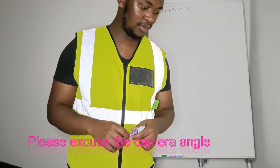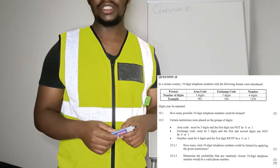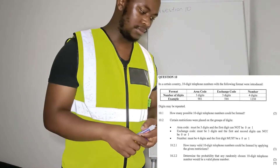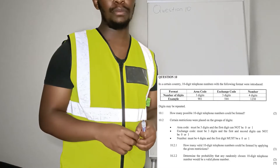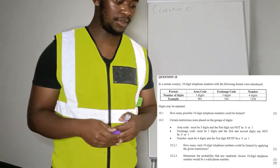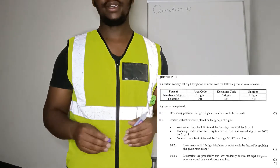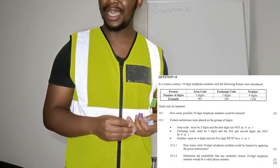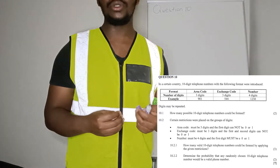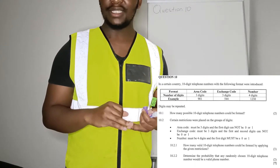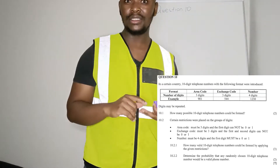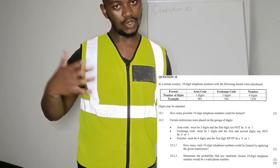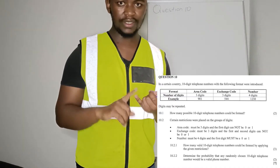Hello everyone, today we're going to have a look at the 2020 November Paper 1 of Mathematics Grade 12. We're going to look at Question 10, which focuses on probability. Before I go deep or touch base on the question, I just want to let you know that this is a very challenging topic - not too hard, but it requires you to always be awake, study the basics, and understand the jargon or the words they use in probability.